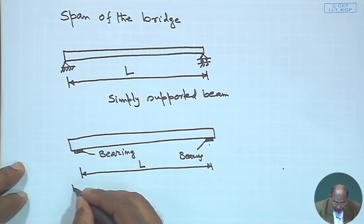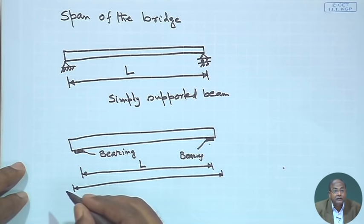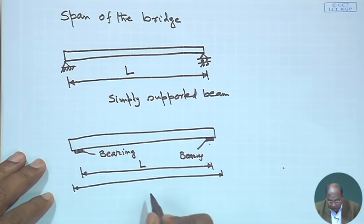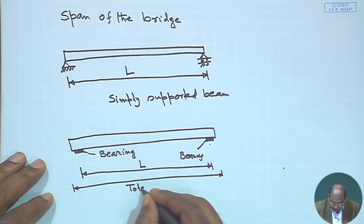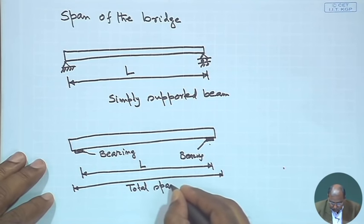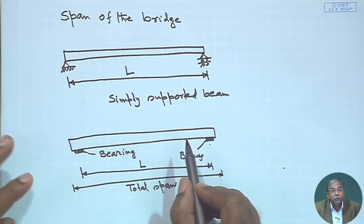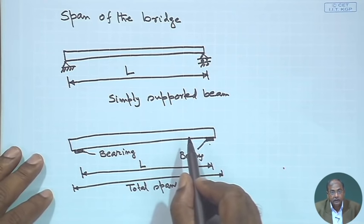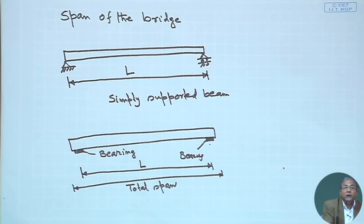We have another length — that is the actual one you have to construct. That dimension we can consider the total span. Our objective is to find the physical dimension of the deck, and all elements shown in the figure — footpath on both sides, crash barrier — will come into picture.